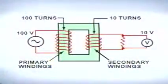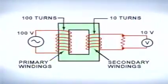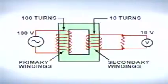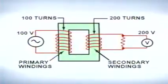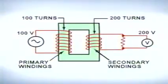If the primary winding has more turns than the secondary, the voltage at the secondary will be lower than the voltage supplied to the primary winding — this transformer is called a step-down transformer. If the primary winding has fewer turns than the secondary, the voltage at the secondary will be higher than the voltage supplied to the primary winding — this transformer is called a step-up transformer.